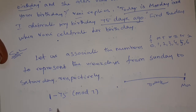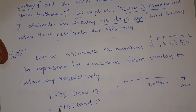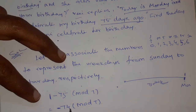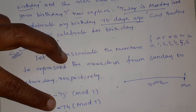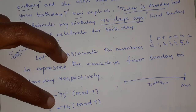This is equal to minus 74 mod 7. Minus 74 is equal to 7 times a multiple, and minus 4 is equal to 3.